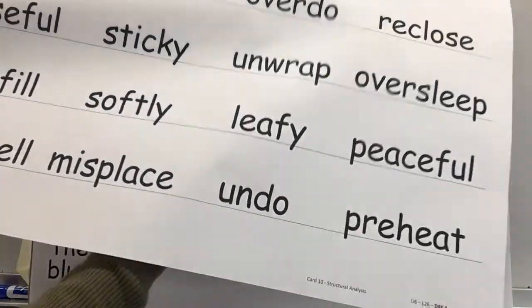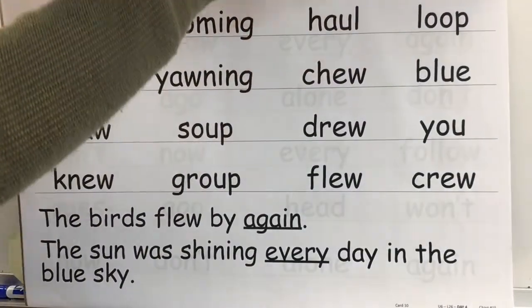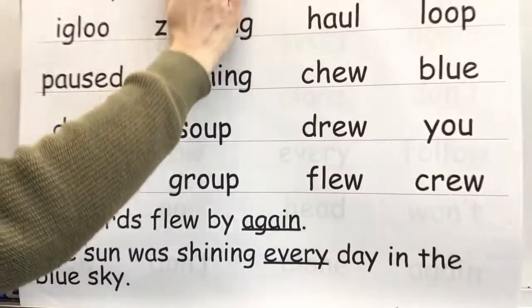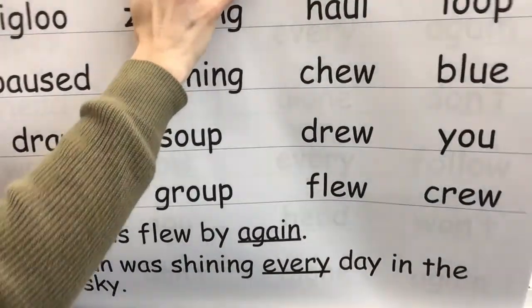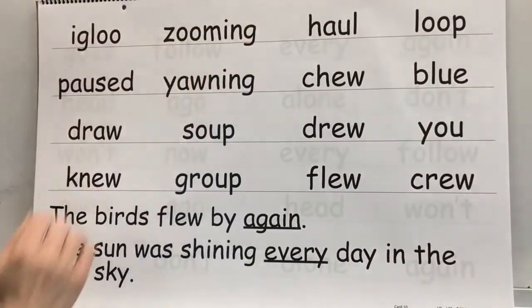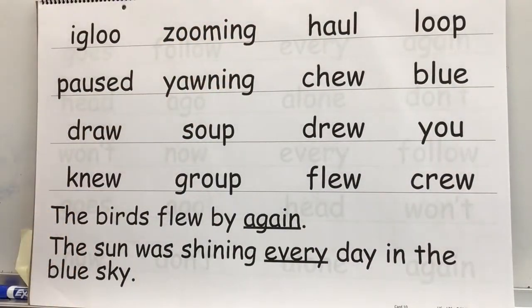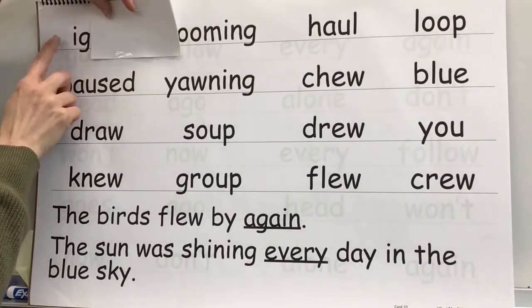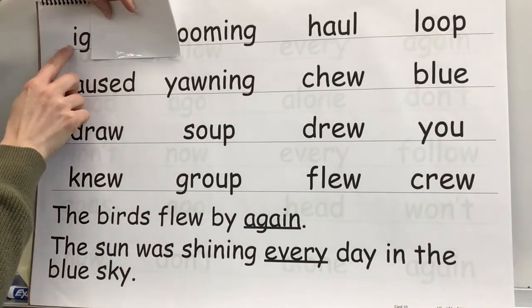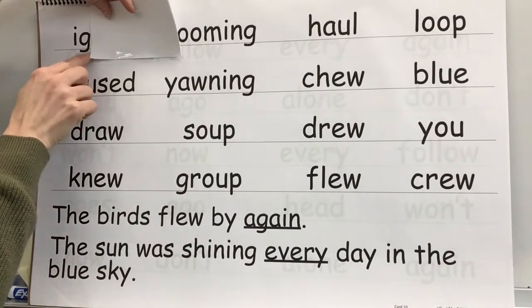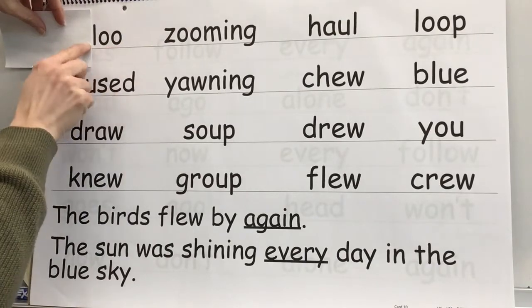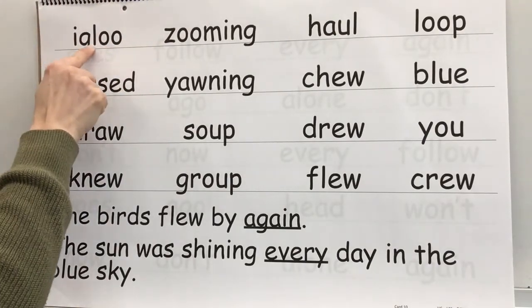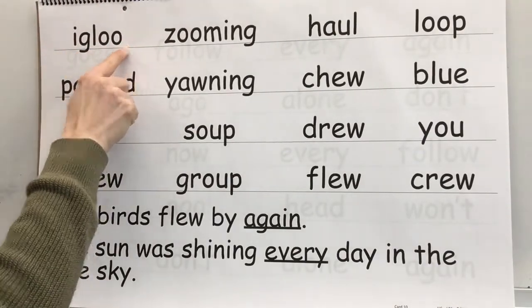Now we're going to practice reading some words. First we'll say a sound for a sound spelling, then we will read the word. Get ready. Sound: i. Syllable: ig. Sound: o. Syllable: loo. Blend: igloo. Word: igloo.